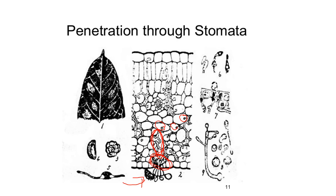Next is penetration through the stomata. A germ tube emerges and reaches deep into the substomatal cavity, where it dilates into a larger infection vesicle. From this vesicle, a primary hypha emerges and develops mycelium that spread further within the leaf tissue, extending mainly into the intercellular space of spongy parenchyma tissue. Lastly, a haustorium is formed that penetrates into the host cell from the intercellular space.